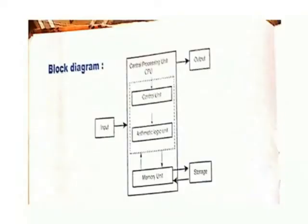Let us see about the block diagram. In the block diagram, we have CPU — Central Processing Unit, CU — Control Unit, ALU — Arithmetic Logic Unit, and MU — Memory Unit.